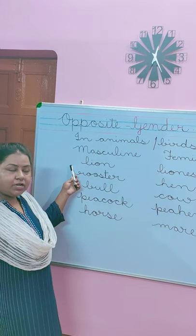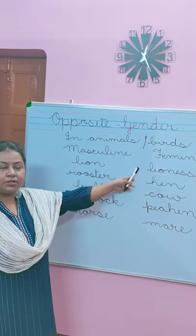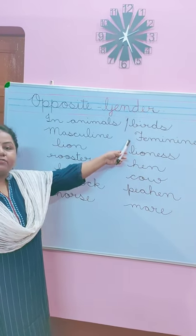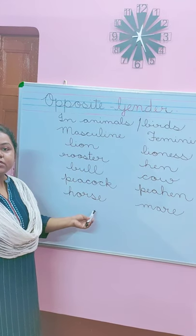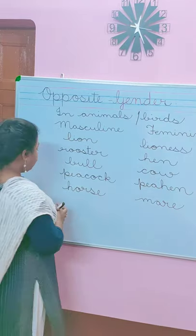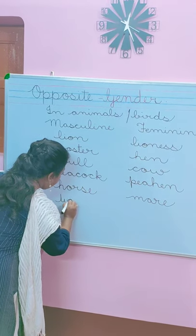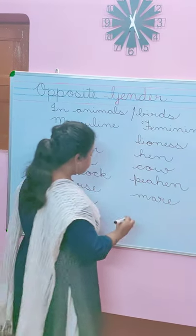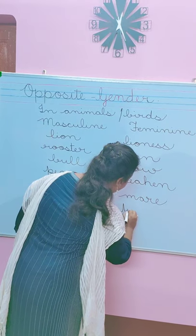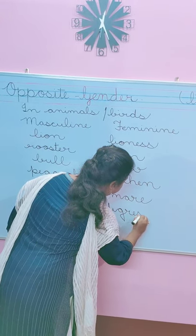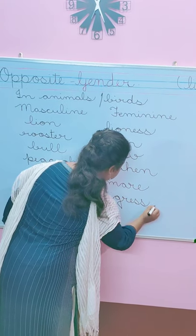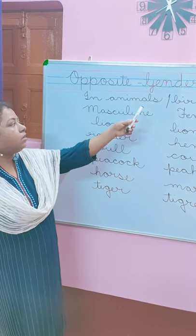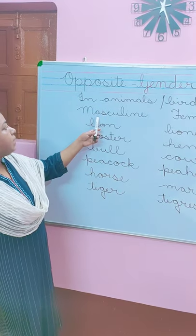Masculine is male gender and feminine is female gender — he is referred to as masculine and she is referred to as feminine. These are opposite gender. Masculine — tiger, T-I-G-E-R — and feminine — tigress, T-I-G-R-E-S-S. So children, these are opposite gender in animals or birds.